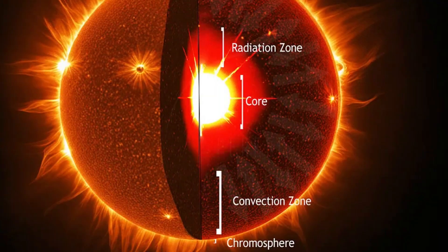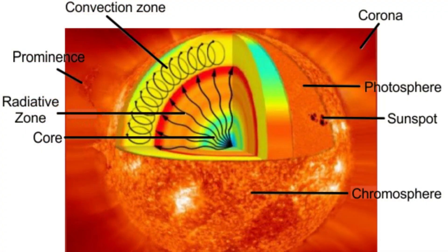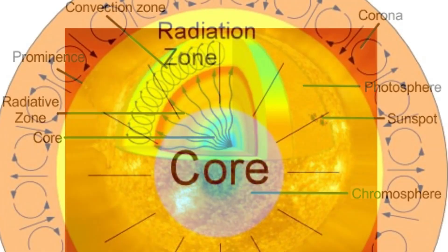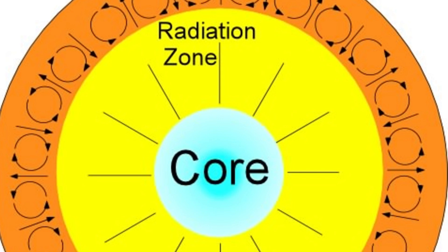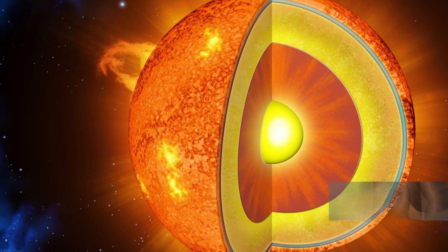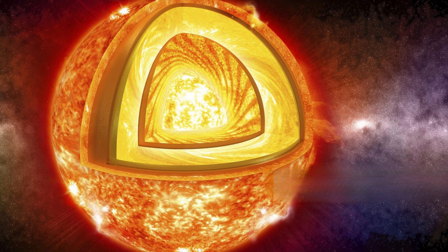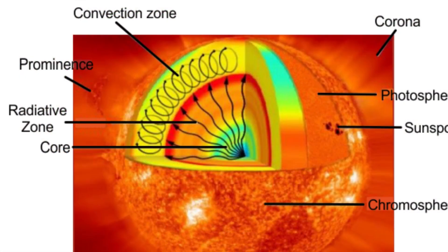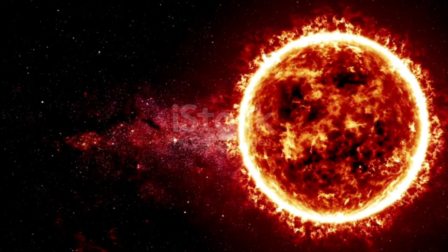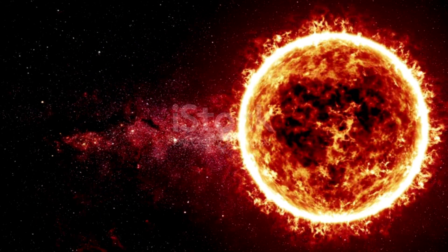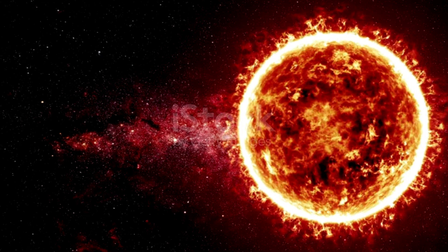The Radiative Zone surrounds the core. The energy produced in the core moves outward through this layer by radiation. The temperature here is slightly cooler than the core, about 7 million degrees Celsius, ranging down to about 2 million degrees Celsius near the convective zone. It can take thousands to millions of years for the energy to move through this zone.